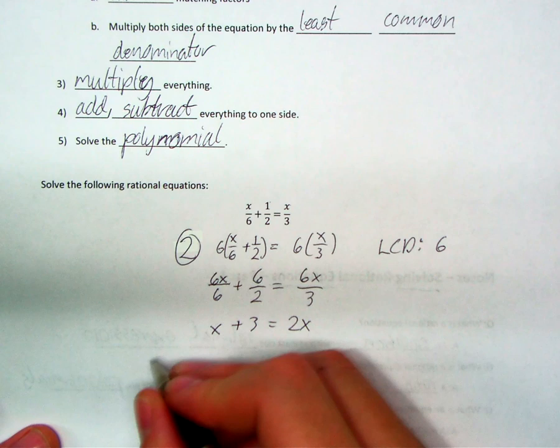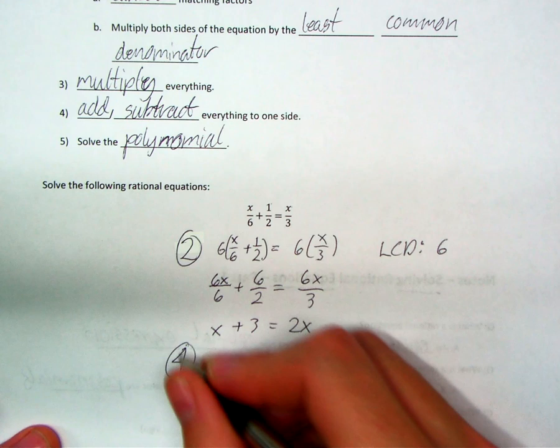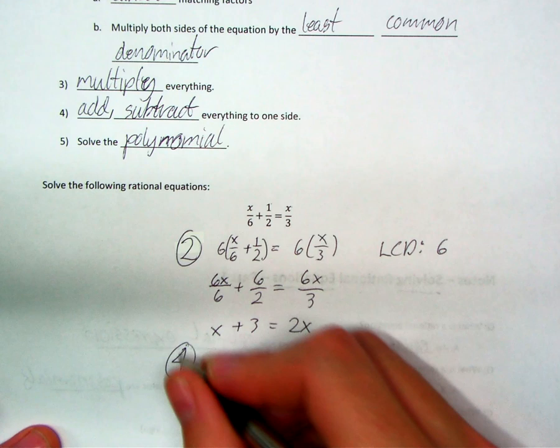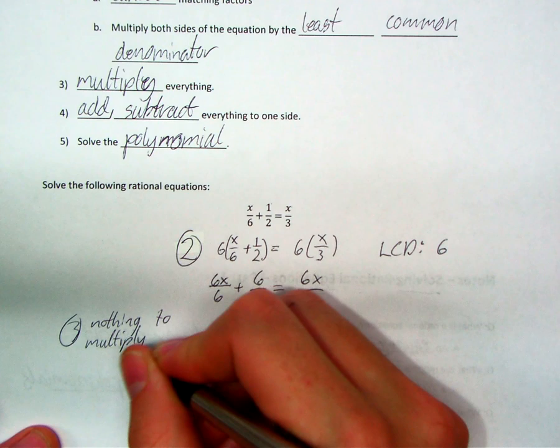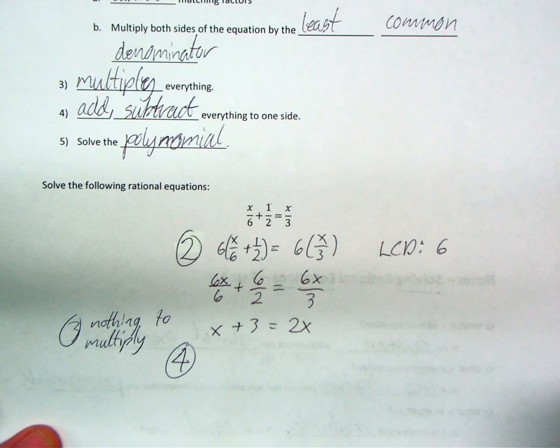So now, can I multiply anything? That's my third step. It doesn't look like there's anything to multiply here. So I'm going to go right to step 4. By the way, that's step 3. Nothing to multiply. Step 4.